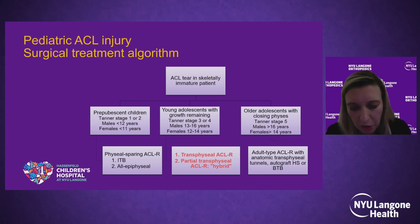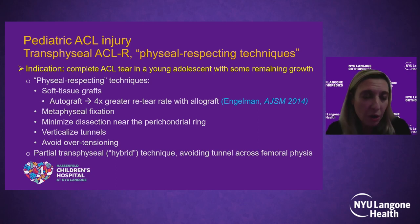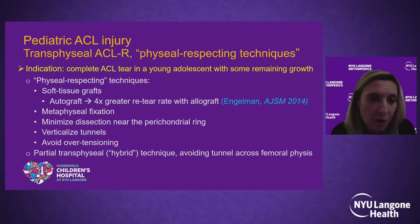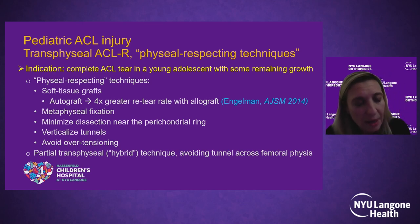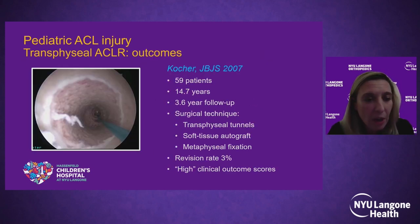For transphyseal ACL reconstruction, the indication is a complete symptomatic ACL tear in a young adolescent with some remaining growth. Physeal-respecting techniques include using a soft tissue graft without a bone plug, almost always autograft — since there is a four times greater re-tear rate with allograft in this population — metaphyseal fixation, minimizing dissection near the perichondrial ring, verticalizing the tunnels, and avoiding over-tensioning. The Boston Children's Experience showed a revision rate of 3%, which is excellent, and intraoperatively the white line visible in the femoral tunnel is the physis.